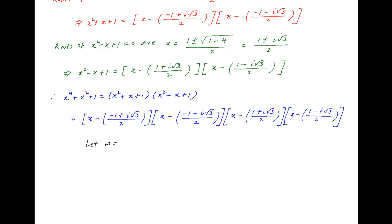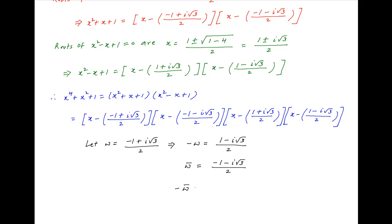Now if we denote minus 1 plus i times root 3 upon 2 by omega, then it follows that minus omega equals 1 minus i times root 3 upon 2, the conjugate of omega equals minus 1 minus i times root 3 upon 2, and minus of the conjugate of omega equals 1 plus i times root 3 upon 2.